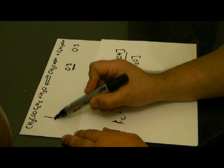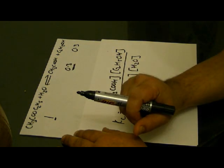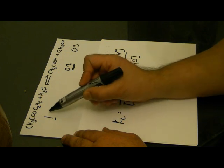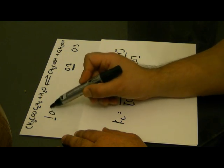But here we have a problem. We don't have one mole of ethyl ethanoate, we've actually used up 0.3 moles. So the concentration of ethyl ethanoate is 0.7.